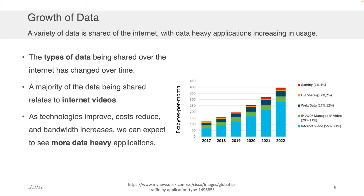As technology improves, costs reduce, and bandwidth increases, we can expect to see more data-heavy applications. That tiny little fraction in 2017 of red — corresponding to the number of exabytes per month used on gaming — has grown pretty substantially as a total fraction of Internet data. As streaming tools improve, you're going to see this distribution shift, probably in the direction of gaming or other services we'll come to know.